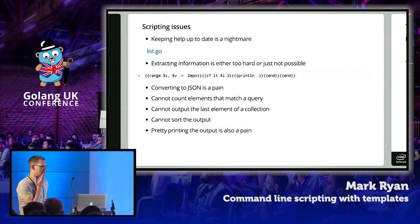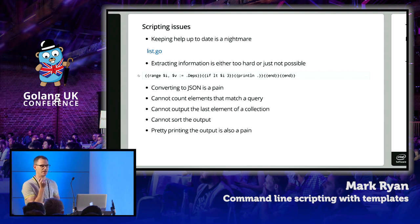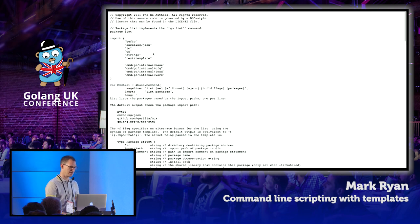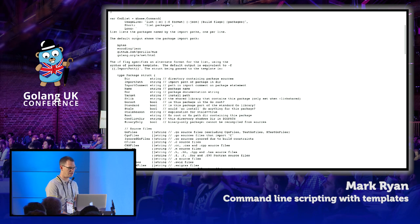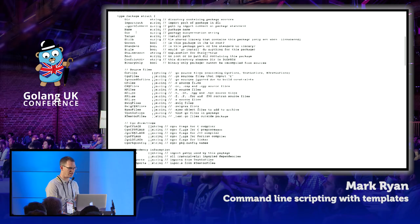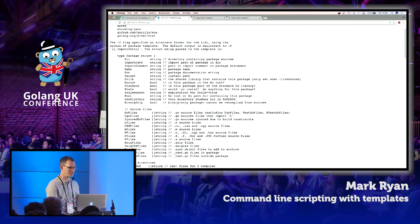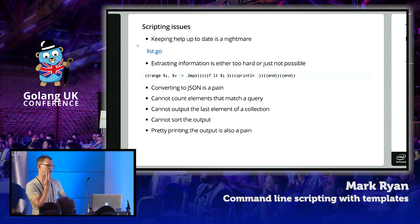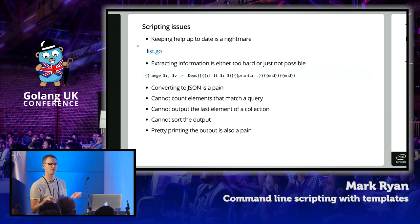There are quite a few problems with using the standard template language for command line scripting. The first problem is you have to document the types you're passing to user scripts; otherwise users can't write those scripts. Go list does this by hard-coding the type information in a help string — but this is problematic because if you change the underlying type, you have to remember to change the documentation, and the compiler won't tell you the documentation is out of date. This was particularly difficult for us because we had many different data structures for different commands.